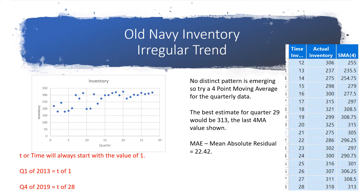When I took the residuals for this data, I took the difference between the actual inventory and the smooth moving average, got the residual, and then took the absolute value of each of those and averaged them up. That results in an MAE of 22.42.